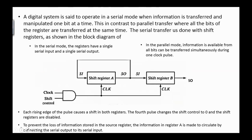A digital system is set to operate in serial mode when information is transferred and manipulated one bit at a time. This is contrasted with parallel transfer, where all bits of the register are transferred at the same time. Here we have the clock pulse and the shift control. To prevent the loss of information stored in the source register, the information in register A is made to circulate by connecting the serial output to its serial input.